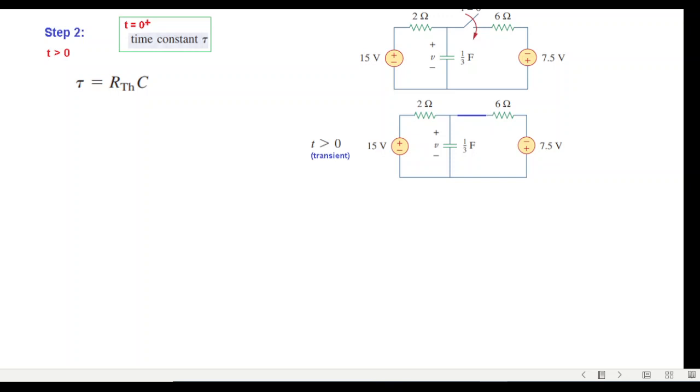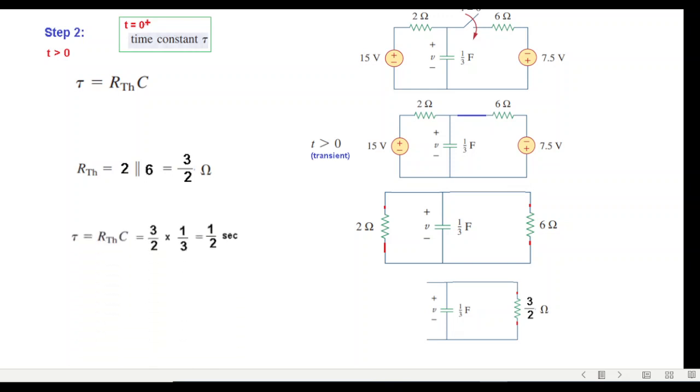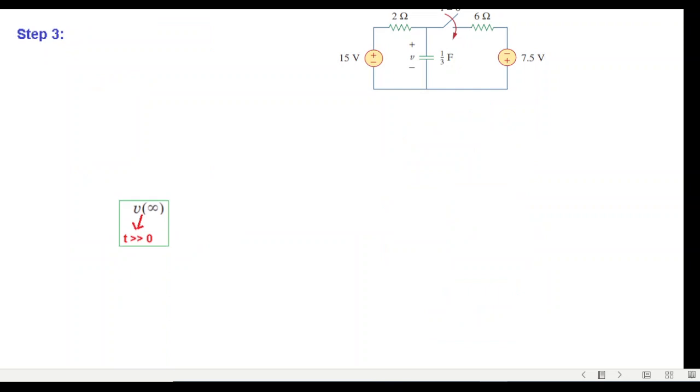I need to calculate the equivalent resistance. I have a 2-ohm resistor in parallel with a 6-ohm resistor. Two parallel six gives three halves, which equals 1.5 ohms. So τ equals R_th times C equals 3/2 times 1/3 seconds, which equals 1/2 second.